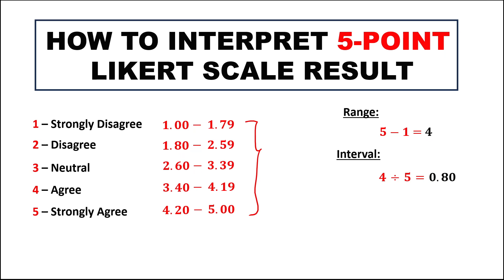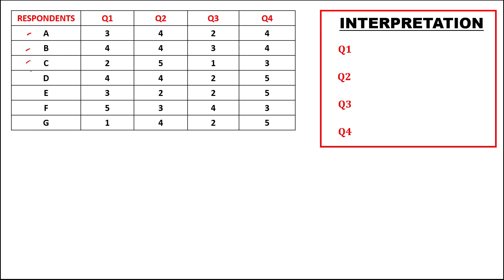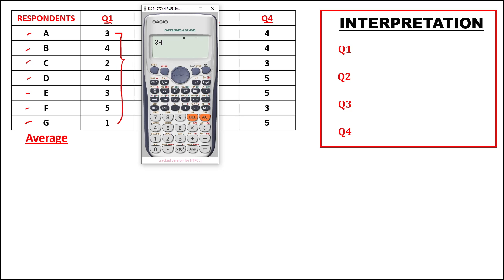So if we have 7 respondents and these are the responses for every question, first we need to find the average for every question. For question number 1, to find the average, add all the numbers and divide by the number of respondents. Since we have 7 respondents, we have 3 + 4 + 2 + 4 + 3 + 5 + 1, then divide by 7. So the average is 3.14.